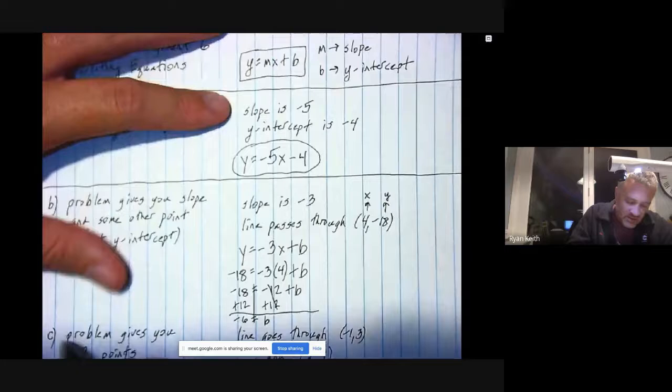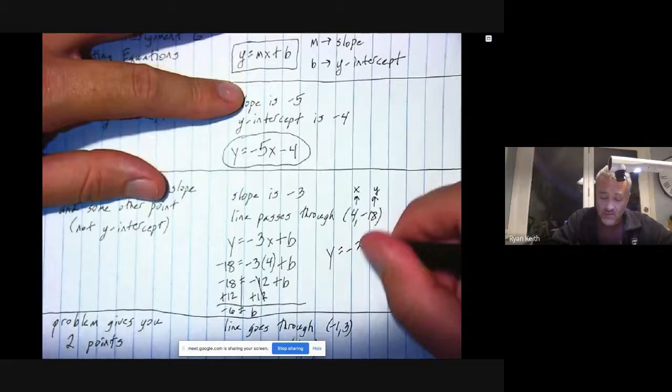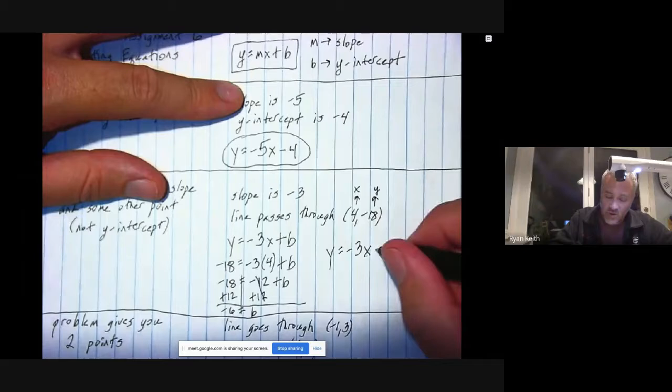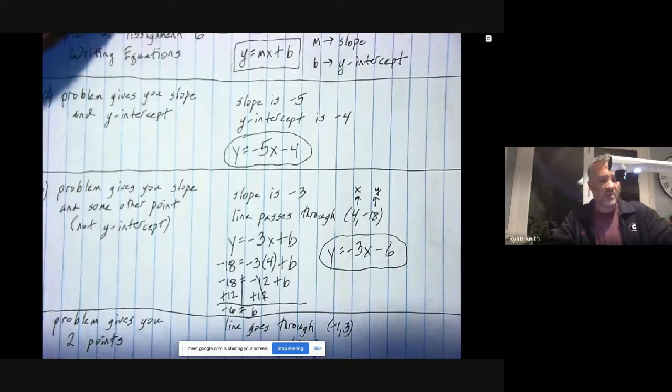So b is negative 6, therefore I now know how to completely write my line equation. The negative 3x we already knew, and our b, our y-intercept, we had to work for it, but now we know it's negative 6, and that equation is done.